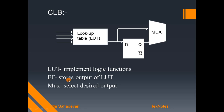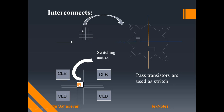Inside a CLB: a look-up table is used to implement logic functions; a flip-flop is used to store the output of the LUT; a multiplexer is used to select the desired output. A CLB can also contain a counter or full adder. There can be more than one LUT, more than one flip-flop, more than one full adder, and a multiplexer to select the output. The LUT typically has 4 to 6 inputs.